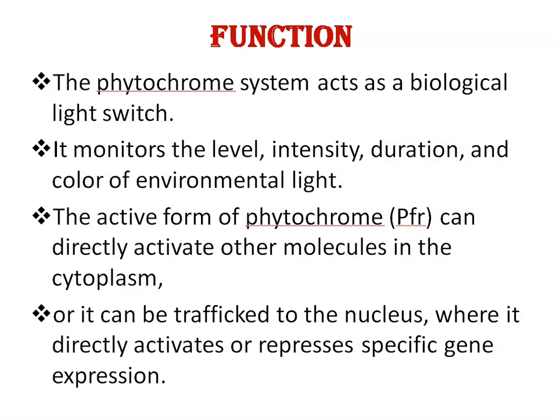Function of phytochrome: The phytochrome system acts as a biological light switch. It monitors the level, intensity, duration, and color of environmental light. Red light converts phytochrome from the PR form to the PFR form. PFR can slowly revert to PR in the dark or break down over time. The active form of phytochrome is the PFR form, which can directly activate other molecules in the cytoplasm or be trafficked to the nucleus where it directly activates or represses specific gene expression. Phytochromes have very diverse regulatory functions throughout the entire life cycle of plants, mediating light effects on seed germination, the switch from non-photosynthetic growth in dark-grown seedlings to photo-autotrophy, neighbor sensing, and timing of flowering.